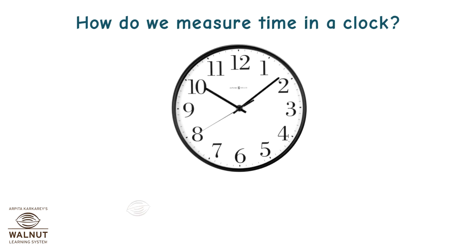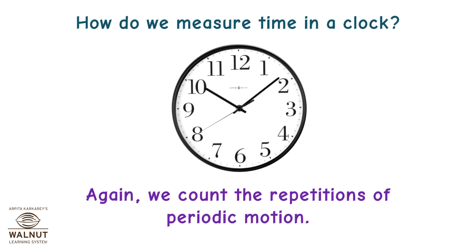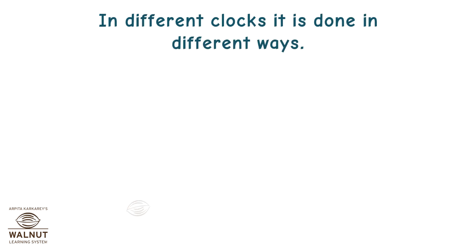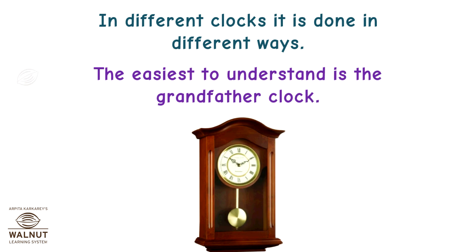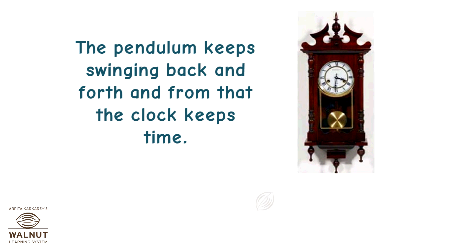How do we measure time in a clock? Again, we count the repetitions of periodic motion. In different clocks, it is done in different ways. The easiest to understand is the grandfather clock. The pendulum keeps swinging back and forth and from that the clock keeps time.